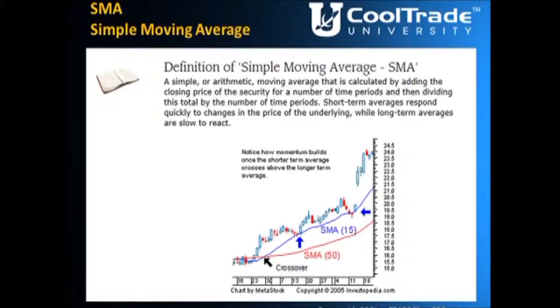Now, no matter how long or short a moving average you're looking to plot, the basic calculations remain the same. The change will be in the number of closing prices that you use. So for example, a 200-day moving average is the closing price for 200 days summed together and then divided by 200. You'll see all kinds of moving averages, from two-day moving averages to 250-day moving averages.